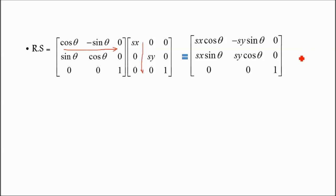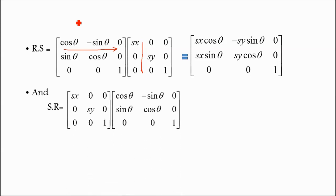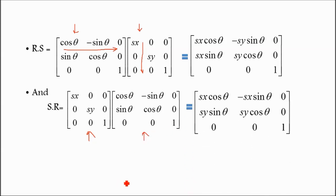Now for the right-hand side, SR means scaling matrix multiplied by rotation matrix — the order has been changed. This gives: sx·cos-theta, minus sx·sin-theta, 0; sy·sin-theta, sx·cos-theta, 0; 0, 0, 1. Comparing the two results, the first and fourth terms are equal, but the second and third terms are different — sy versus sx.